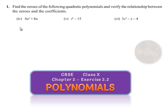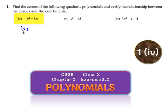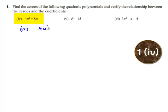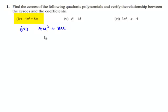Now coming to the fourth problem, which is 4u² + 8u. So let us write down the polynomial P(u) = 4u² + 8u.